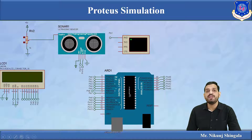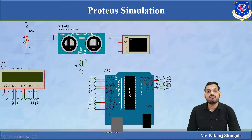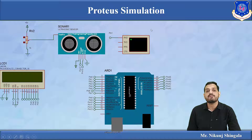One test pin is also provided on the ultrasonic sensor. Since we cannot virtually measure a real distance in simulation, we use this test pin. I have connected a potentiometer (variable resistor) at the test pin, connected to +5V. By clicking the red dots to vary the resistance, the voltage drop across the resistor changes. Based on that, the measured distance changes and is displayed on both the virtual terminal box and the LCD.